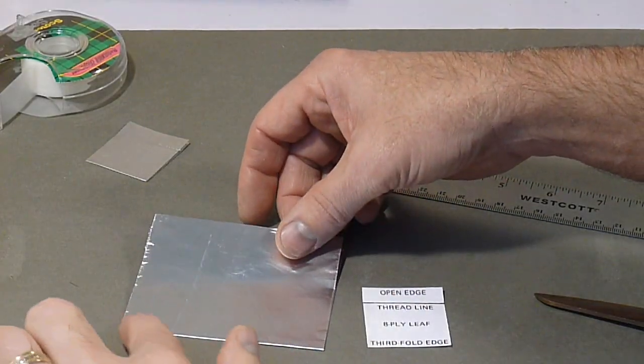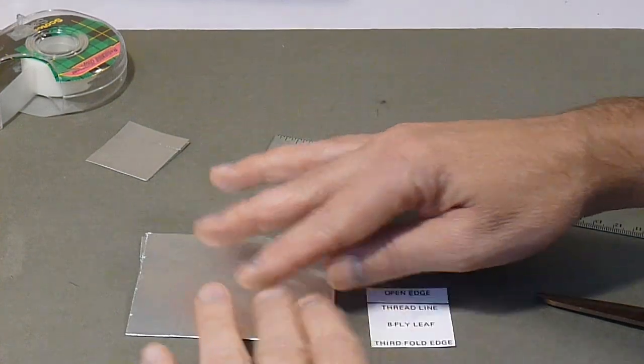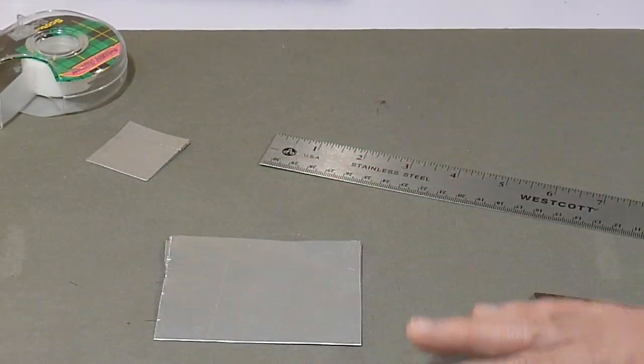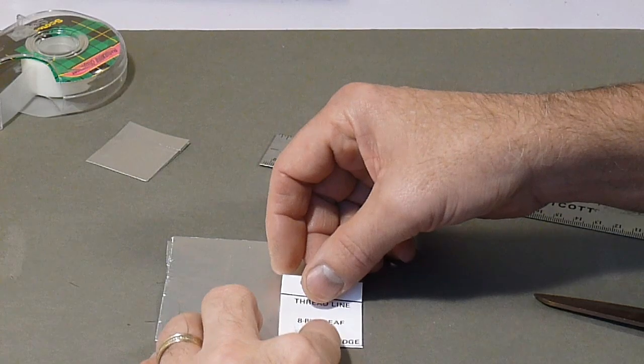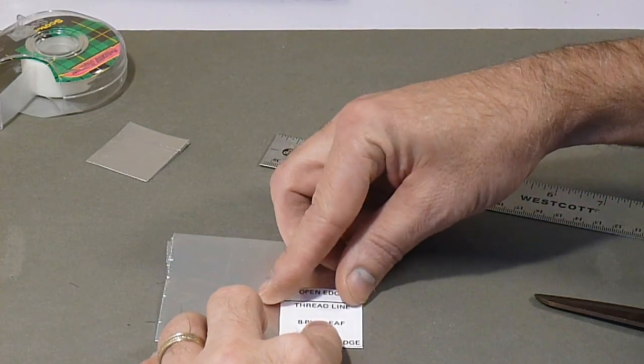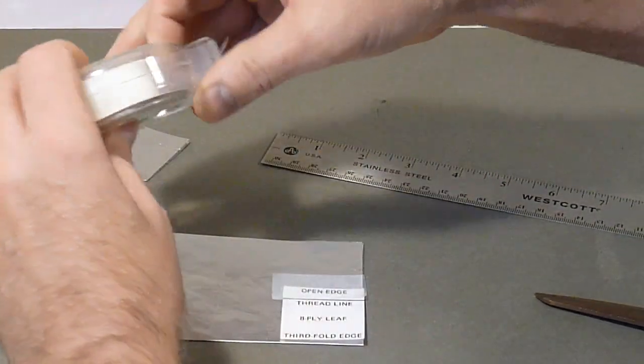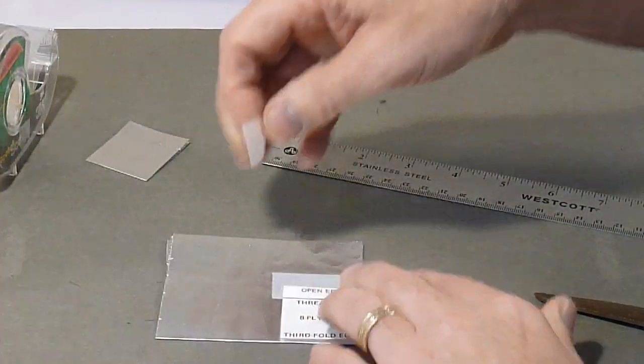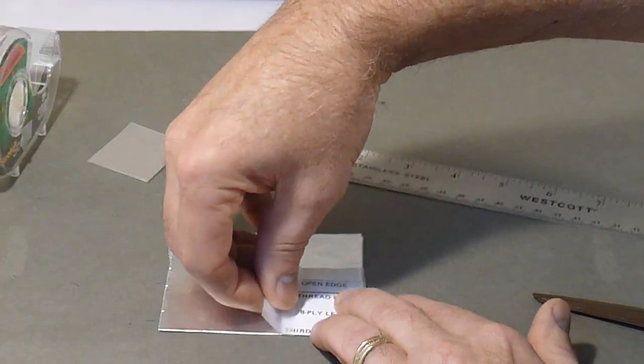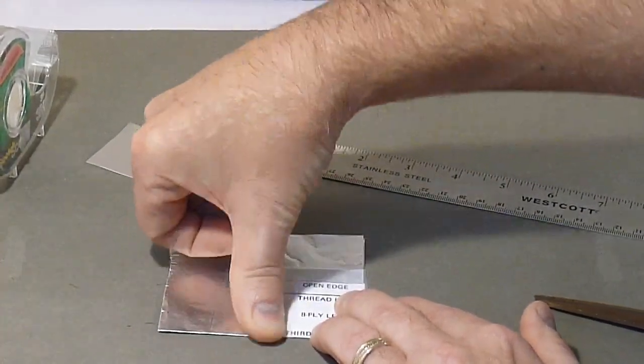Place the 8-ply leaf pattern onto one of the folded aluminum sheets. Make sure the third fold of the aluminum sheet aligns with the bottom of the leaf pattern, and one edge of the pattern also aligns with the second fold edge. Tape down the pattern to the aluminum foil sheet.